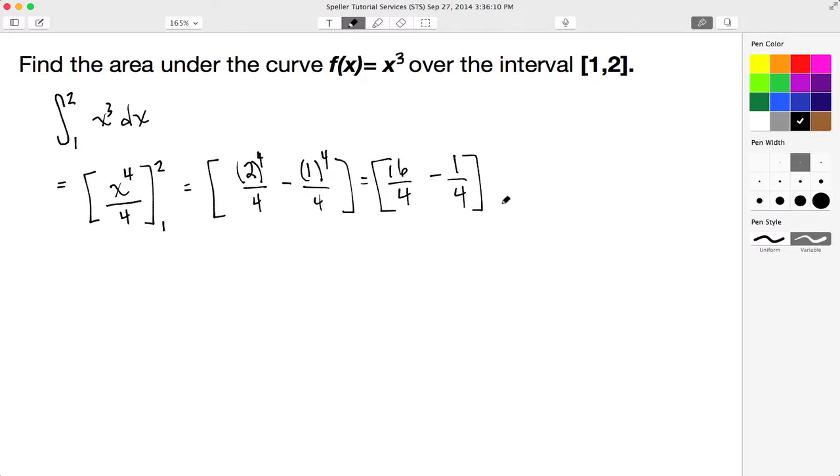Then from here I can simplify. I have 16 divided by 4 to give me 4, so I end up with 4 minus 1/4, which actually turns out to be